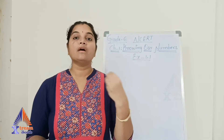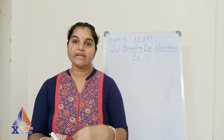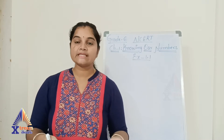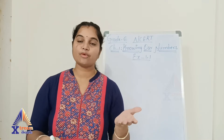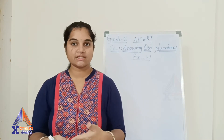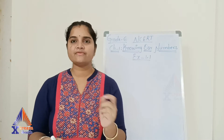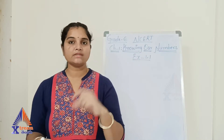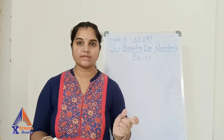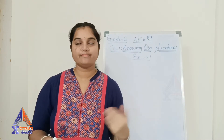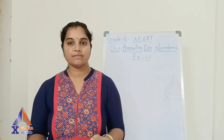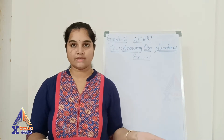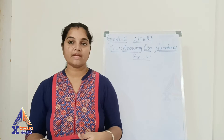Let me give you a brief explanation of what we have in this topic. In 'Knowing Our Numbers' we have different numerals, expressing them in the Indian system of numeration as well as the international system of numeration. The main difference is that in the Indian system we have periods like ones, thousands, lakhs, and crores. In the international system we have ones, thousands, millions, billions, and trillions.